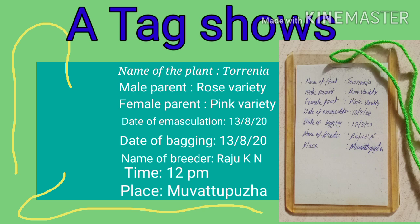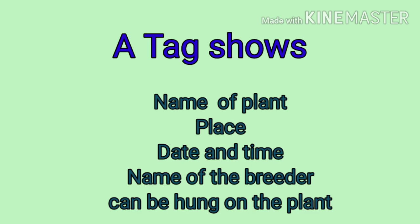At the tagging stage, the tag should include: the name of the plant, the name of the variety, date of the product, date of emasculation, date of bagging, and the name of the plant breeder.